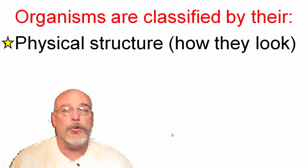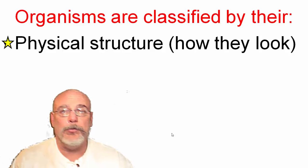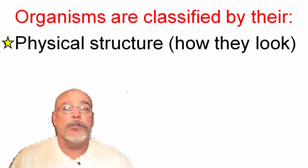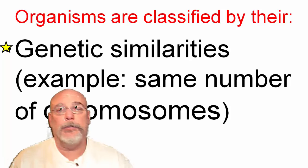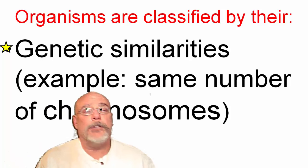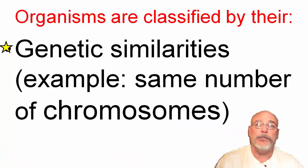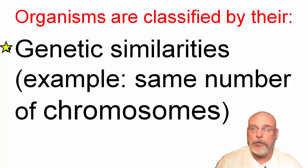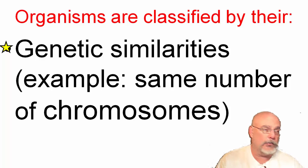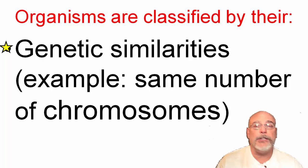Today, organisms are classified by their physical structure — how they look. This is probably the one that makes the most sense. We look at things like whether they have flowers, different types of seeds, different types of leaves. They might also have roots that grow underground that you can eat, like potatoes and carrots.